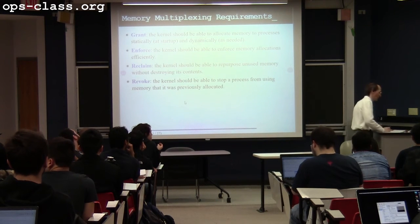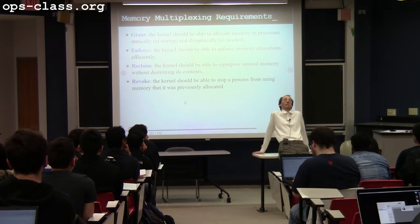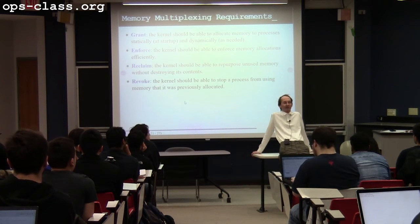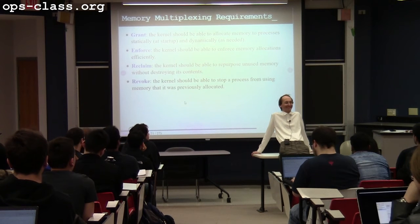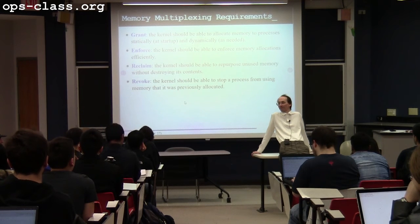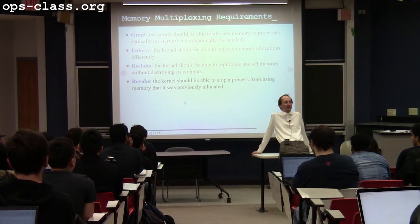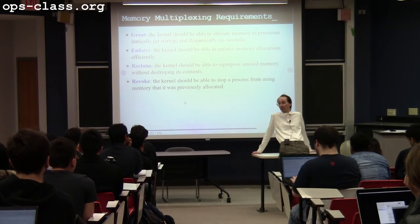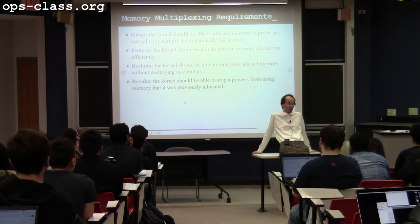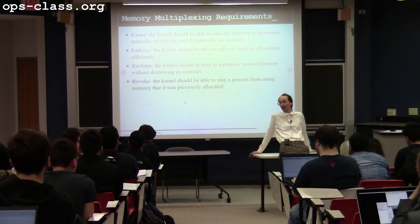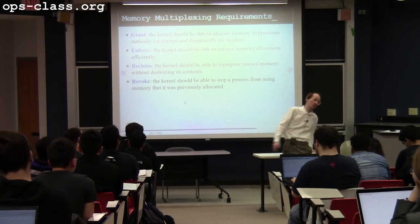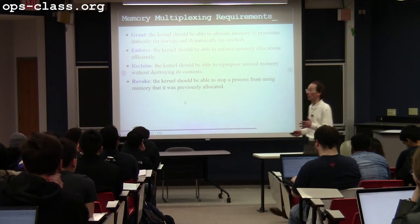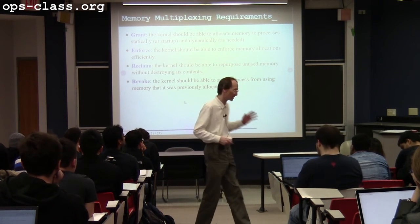Exam question: when did we do time multiplexing of memory? Think back to batch jobs on big mainframe computers — one job runs, gets the entire computer to itself, prints out the syntax error, then the next job runs. In other words, it gets all system resources at once. Currently, we don't give any one program entire access to memory — that's the distinction from spatial multiplexing.